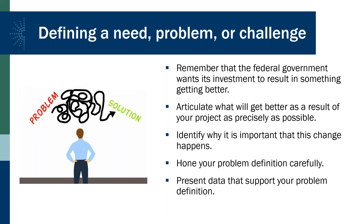One of the key prompts in the project justification section is the identification of the need, problem, or challenge your project addresses — it is a foundational part of your application. The federal government wants its investment to result in something getting better, so articulate what will get better as a result of your project and be as precise as possible. Will someone learn something or develop a skill? Will members of your community be better able to work together? Will collections be better cared for, or will access to your collection be expanded? Hone your problem definition carefully using clear and succinct terms, and gather and present data that support your problem definition.